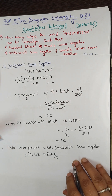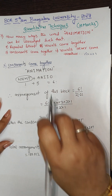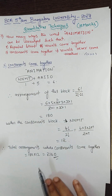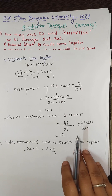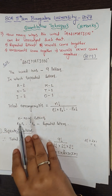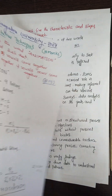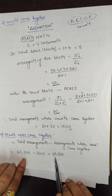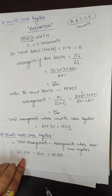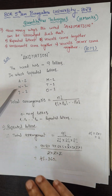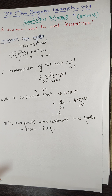Hope all of you understood. To summarize: repeated letters arrangement = 45,360; vowels come together = 1,800; vowels never come together = 43,560; consonants come together = 2,160. We will move to the next question.